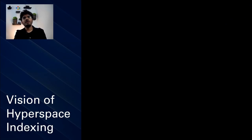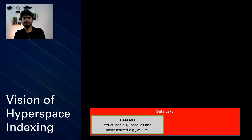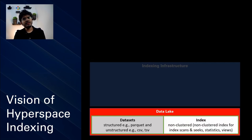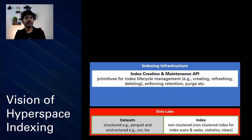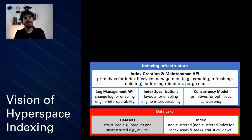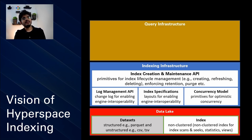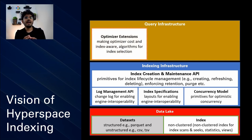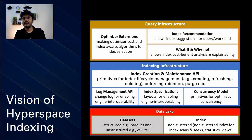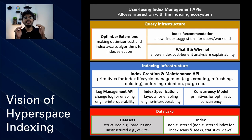Let me paint the end-to-end vision of Hyperspace indexing. The basic assumption is that you have all of your data sitting on the data lake, and we also wanted these secondary indexes to live on the data lake. The majority of our focus has been in building this indexing infrastructure, wherein we expose the ability to create and maintain these indexes through a very simple API. Complementary to these efforts, we also invested in query infrastructure, specifically optimizer extensions, which allow the Spark optimizer to be index-aware and algorithms for index selection. We also have investments going into index recommendation.